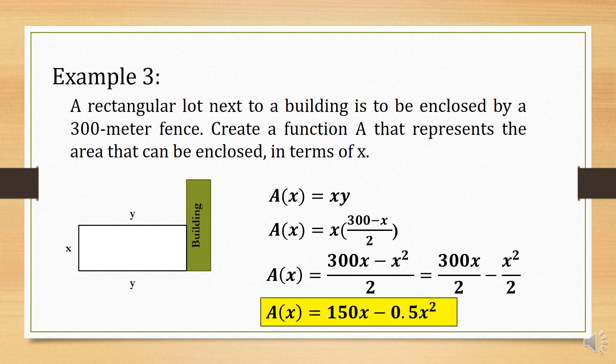Simplifying further, we can write this as 300x over 2 minus x squared over 2. Therefore, A of x is equal to 150x minus 0.5x squared, since 300x divided by 2 is 150x and one-half of x squared is 0.5x squared. This is now the area function that represents the enclosed area in terms of x.